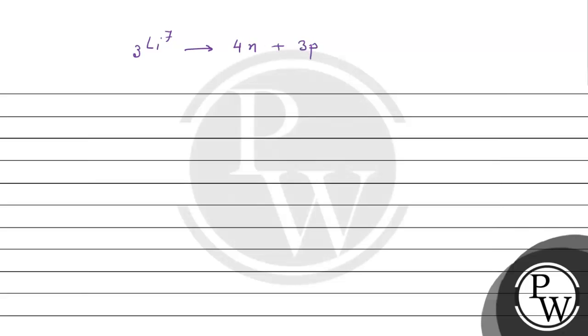Therefore, the mass defect Δm is equal to 4 times the mass of neutron plus 3 times the mass of proton minus the mass of lithium.